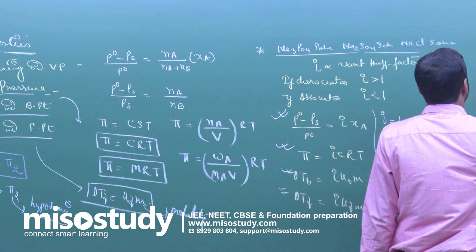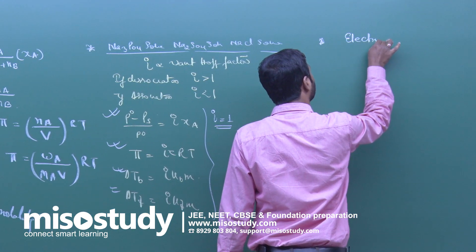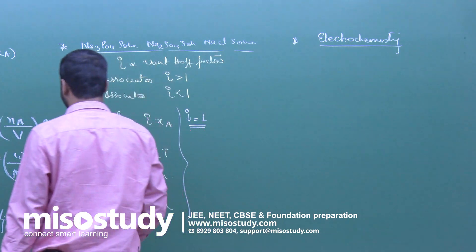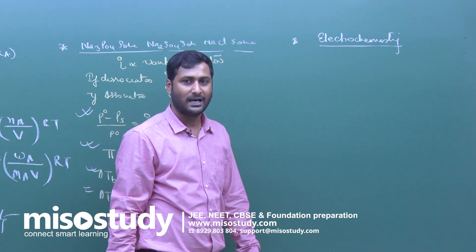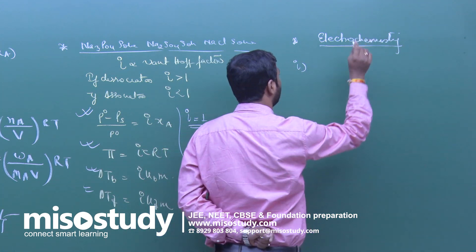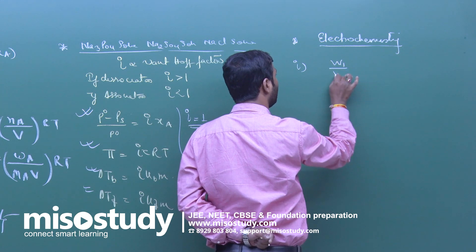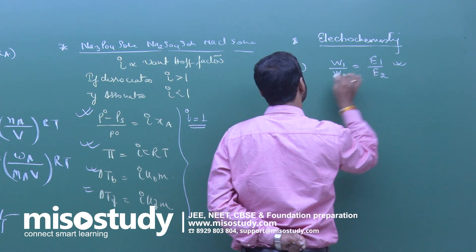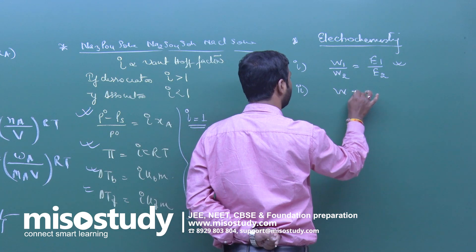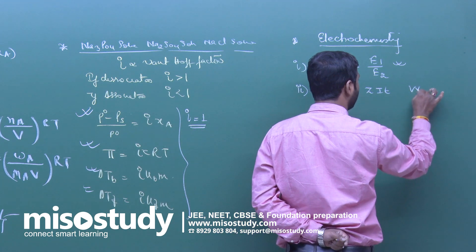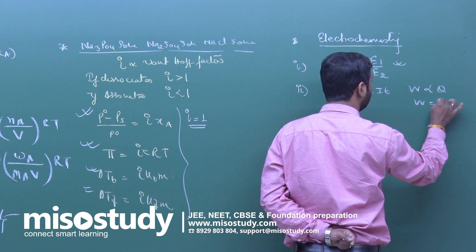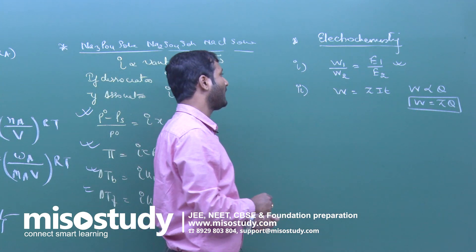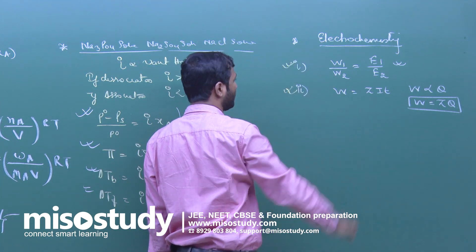Now let us take a few formulas from the chapter on electrochemistry, where we discuss the conversion of electrical energy into chemical energy or vice versa. Faraday's second law: W_1/W_2 = E_1/E_2. Faraday's first law: W = ZIT, or W is directly proportional to Q, so W = ZQ, where Z is the electrochemical equivalent and Q = IT.